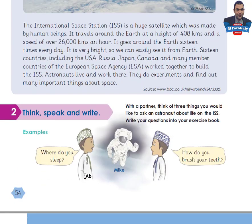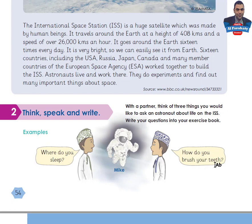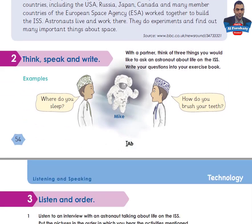Let's look at Activity 2: Think, Speak, and Write. With a partner, think of three things you would like to ask an astronaut about life on the ISS. Write your questions into your exercise book. For example: Where do you sleep? How do you brush your teeth? Try to think of more questions and write them into your exercise book. This is Mike, an astronaut.